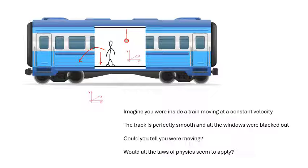If the train were accelerating, that would be different — the ball would dangle at an angle. But we're talking about moving at a constant velocity, not accelerated motion.